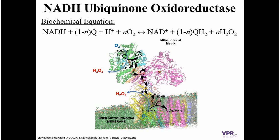For example, does a fully reduced flavomononucleotide produce ROS, or is a flavosemiquinone responsible? Likewise, at the quinone reductase site, is a semiquinone responsible, or is one of the iron-sulfur clusters responsible? It was previously believed that at the quinone reductase site, the N2 iron-sulfur cluster — shown right here, just adjacent to the ubiquinone binding site — was responsible for ROS production. However, we determined through a modeling study that this is not likely to be a major source of ROS production.